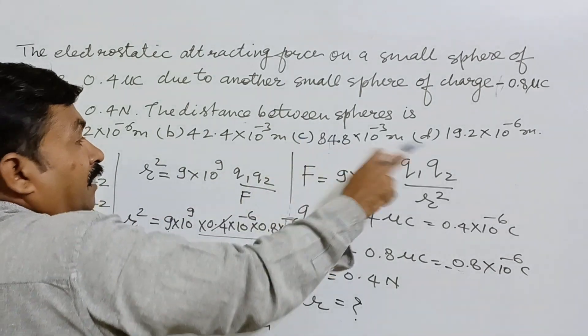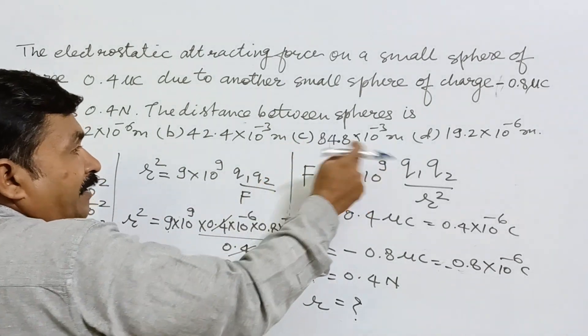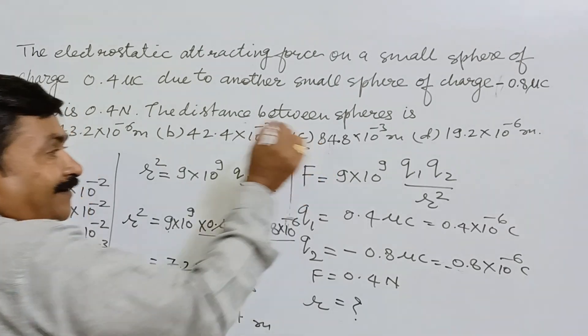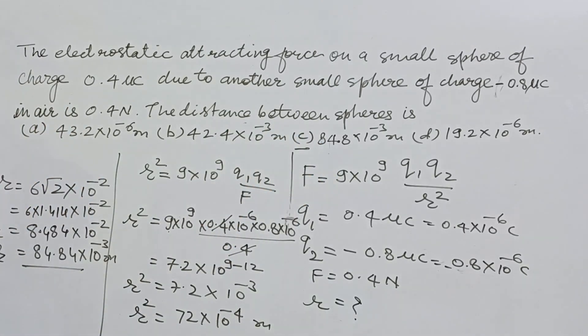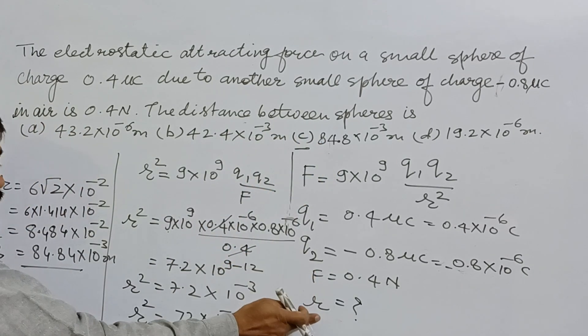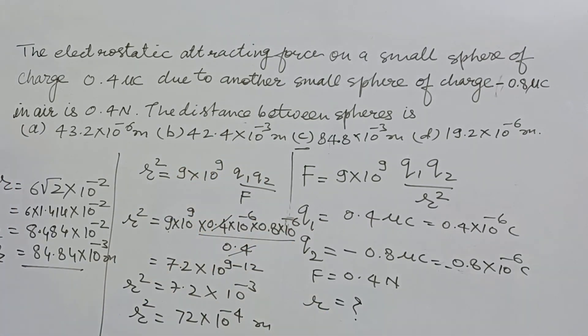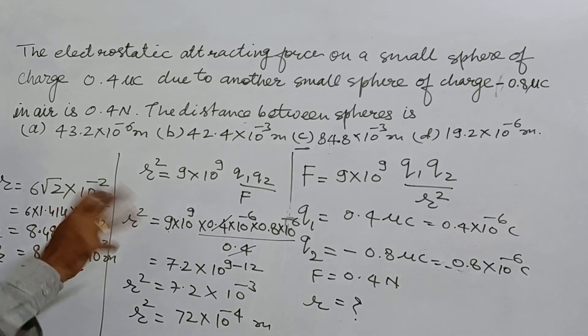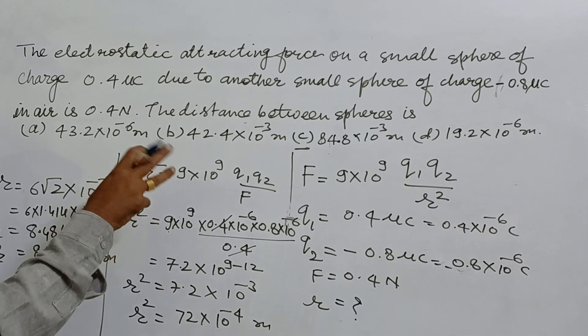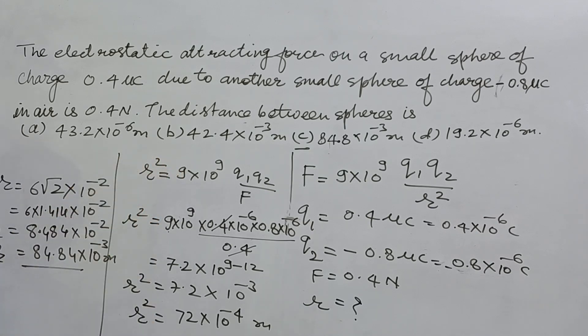So 84.84×10⁻³ meters is the answer. Here we have determined r, the distance between them. Force is given to us and the charges of both spheres are also given, so we can solve these questions in this manner.